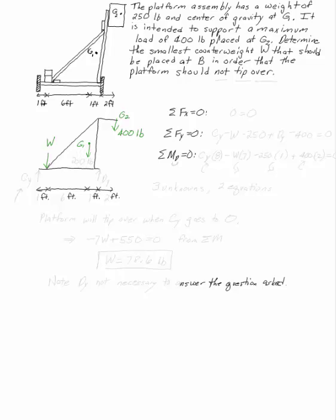What's the counterweight that I need so that my 250 pounds here doesn't tip over due to my 400 pounds there?